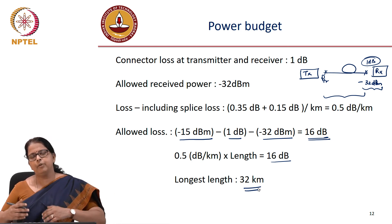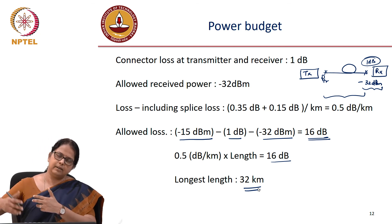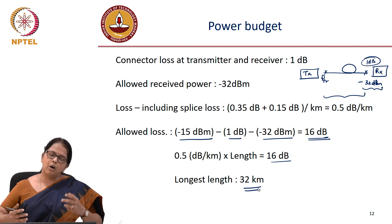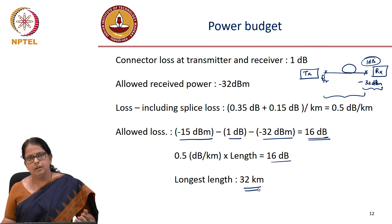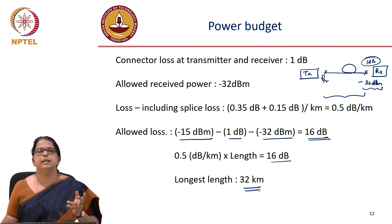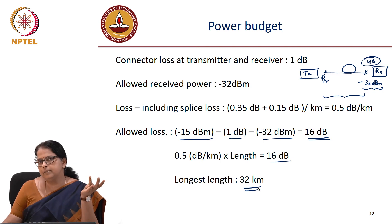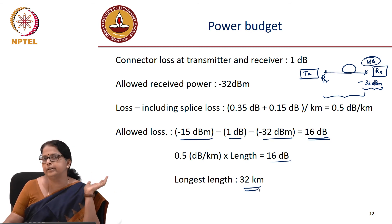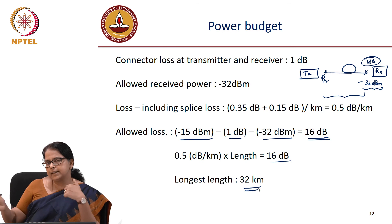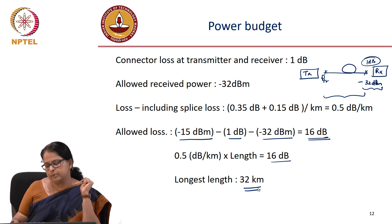If you want to extend this link beyond 32 km, you could regenerate (receive, then re-transmit), or use an EDFA. However, an EDFA cannot be used here because the link operates at 1310 nm, while erbium-doped fiber amplifiers operate in the 1550 nm range. So this access network link practically works only up to 32 km.